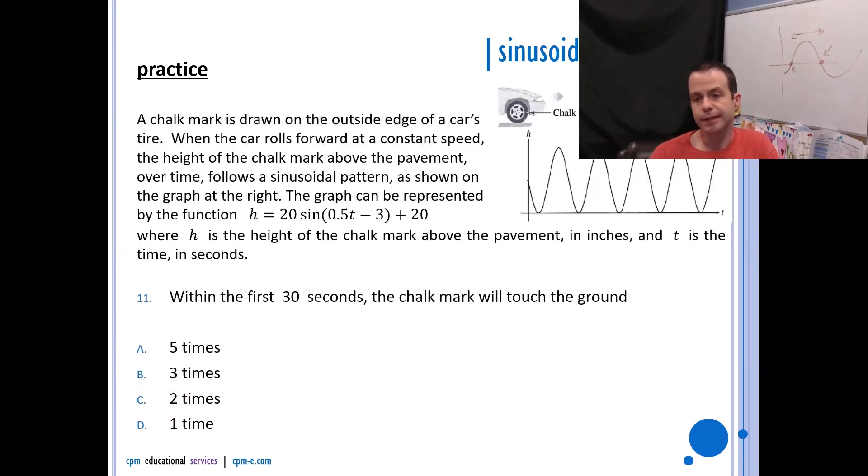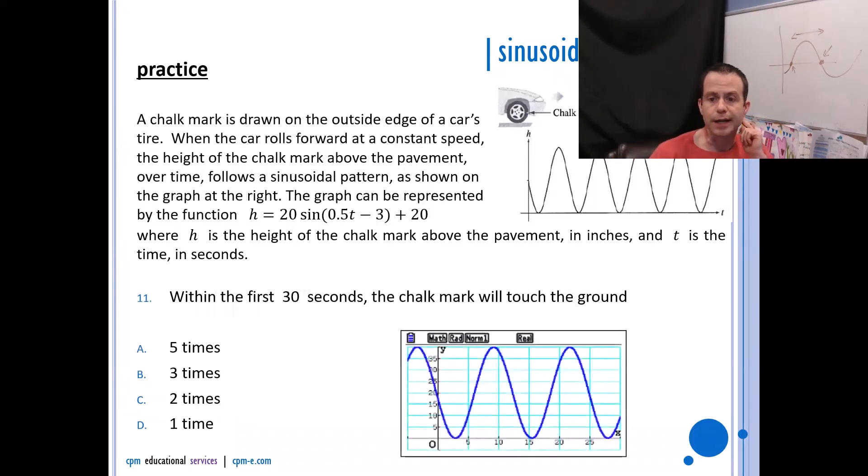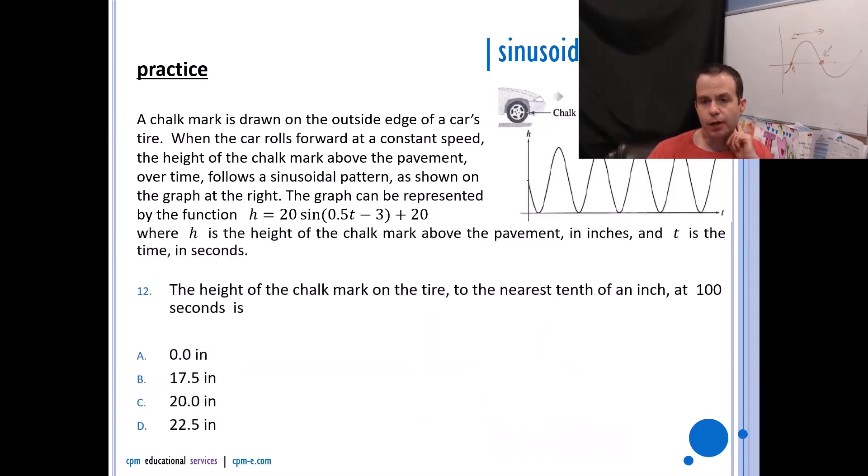Within the first 30 seconds, the chalk mark will hit the ground how many times? So you're going to go into y1, you're going to type this into y1. It says within the first 30 seconds, so that's an x value. You want to set your x max to 30 and then just see how many times your graph hits the ground. When you do that, you should get a picture that looks something like this, and I can see that it'll hit the ground three times.